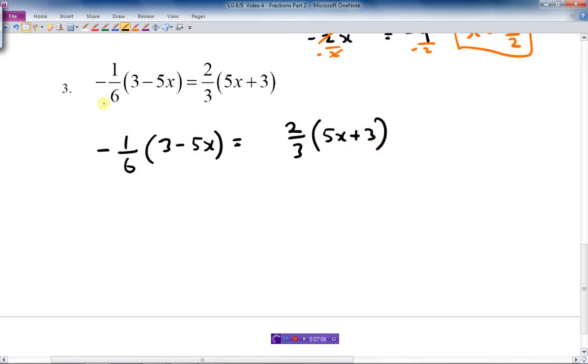Now we've got to get rid of those denominators. What's the common denominator of 6 and 3? Well, 6. Once again, we have 6 as the common denominator. So what I'm going to do is I'm going to multiply this side by 6 and this side by 6.